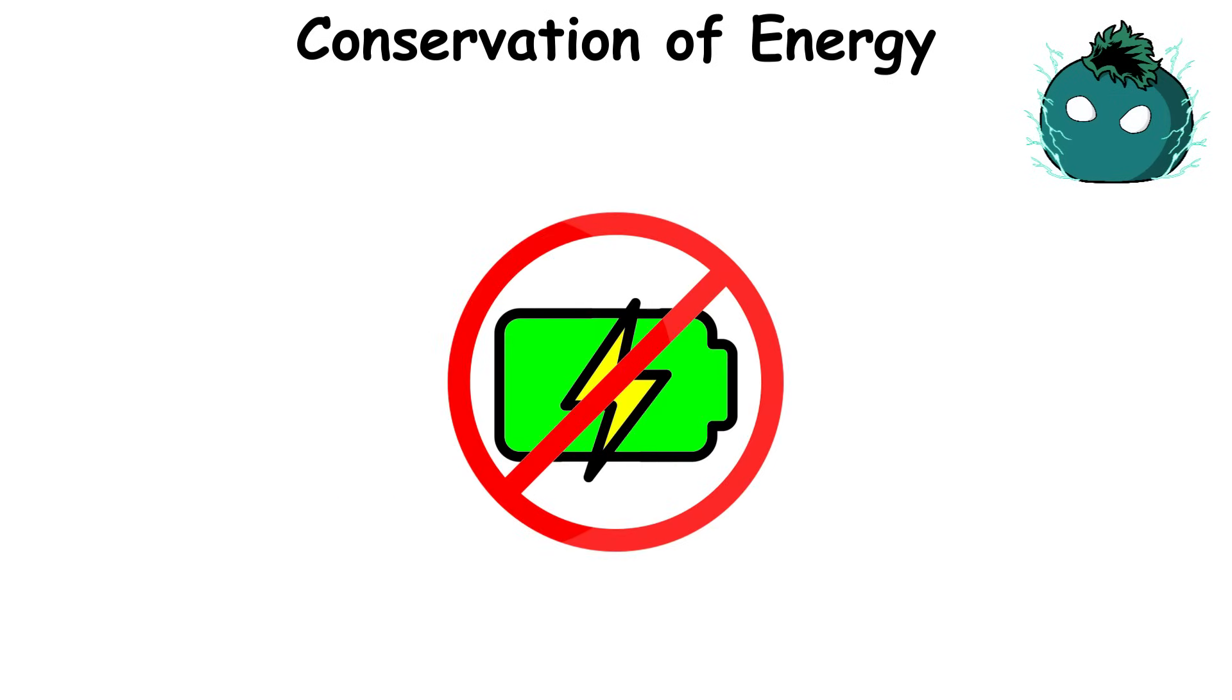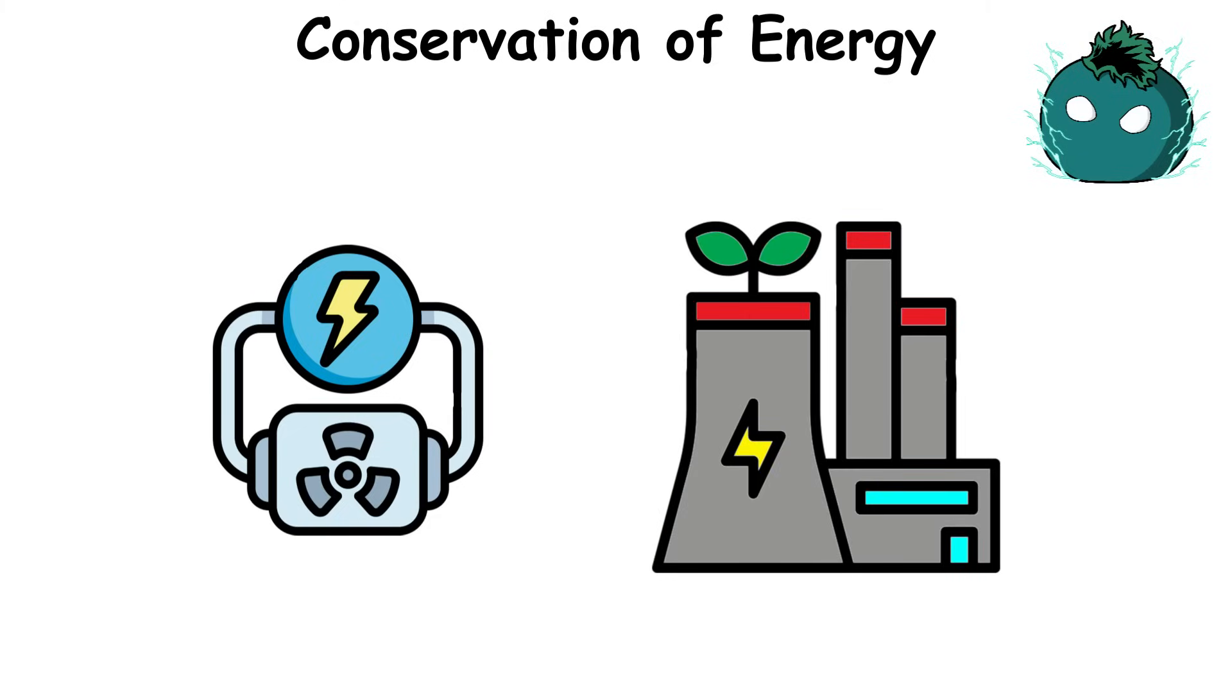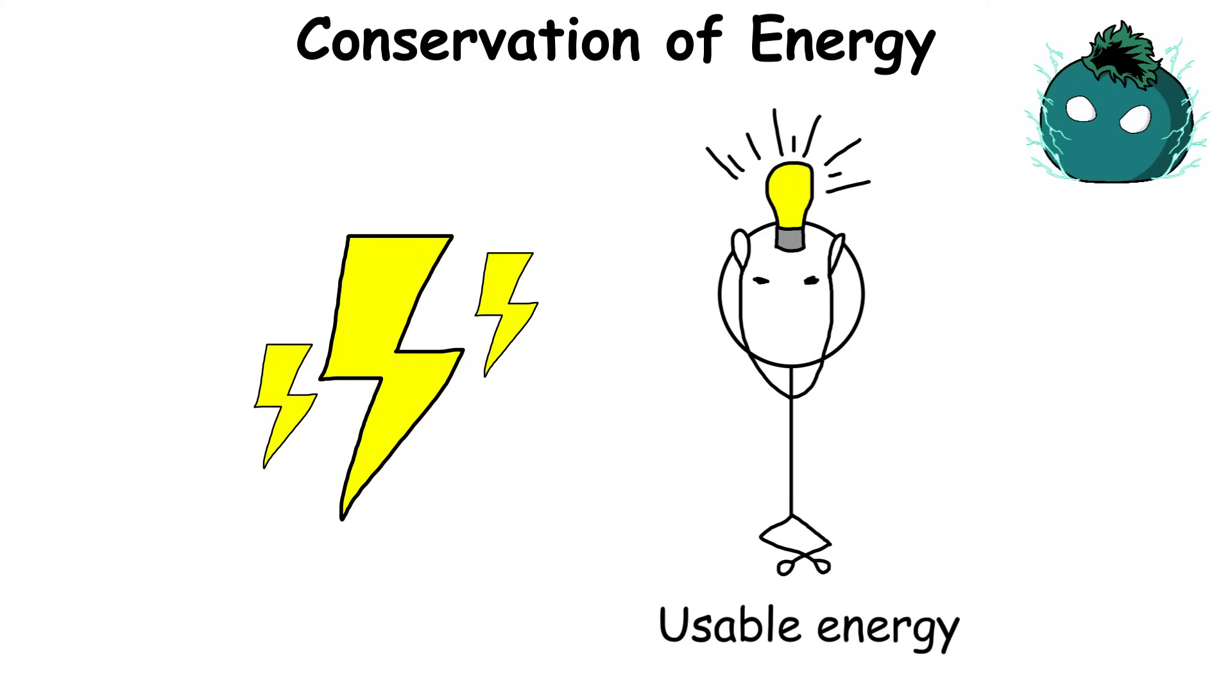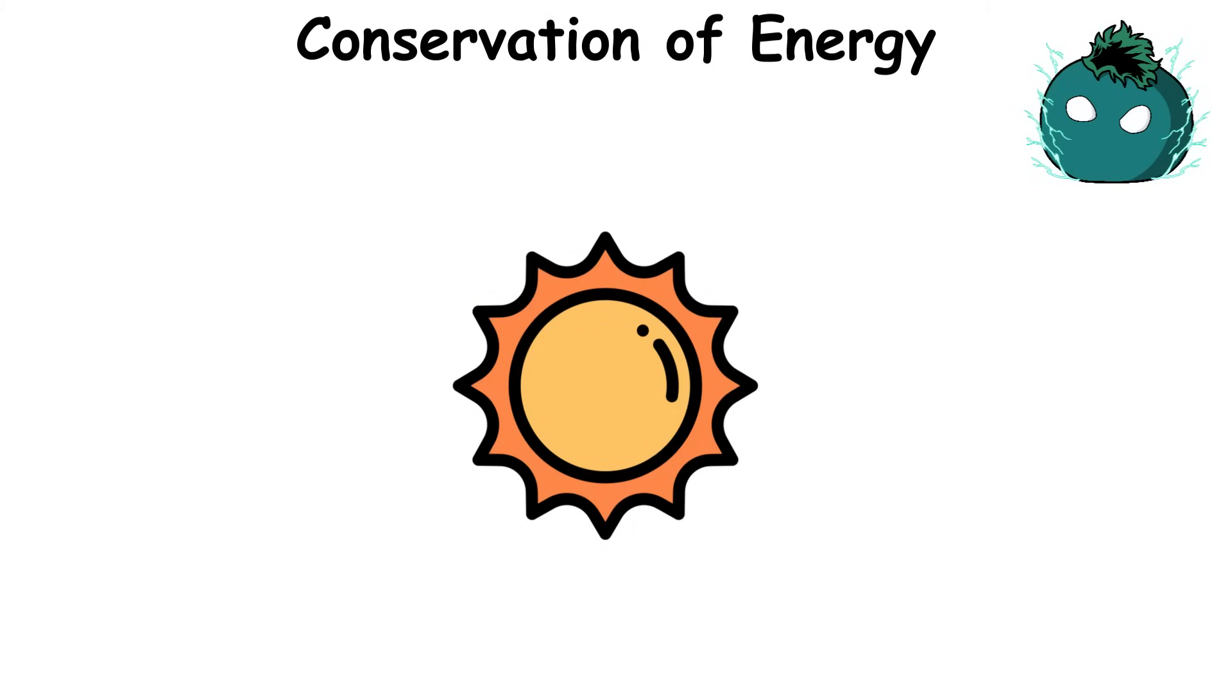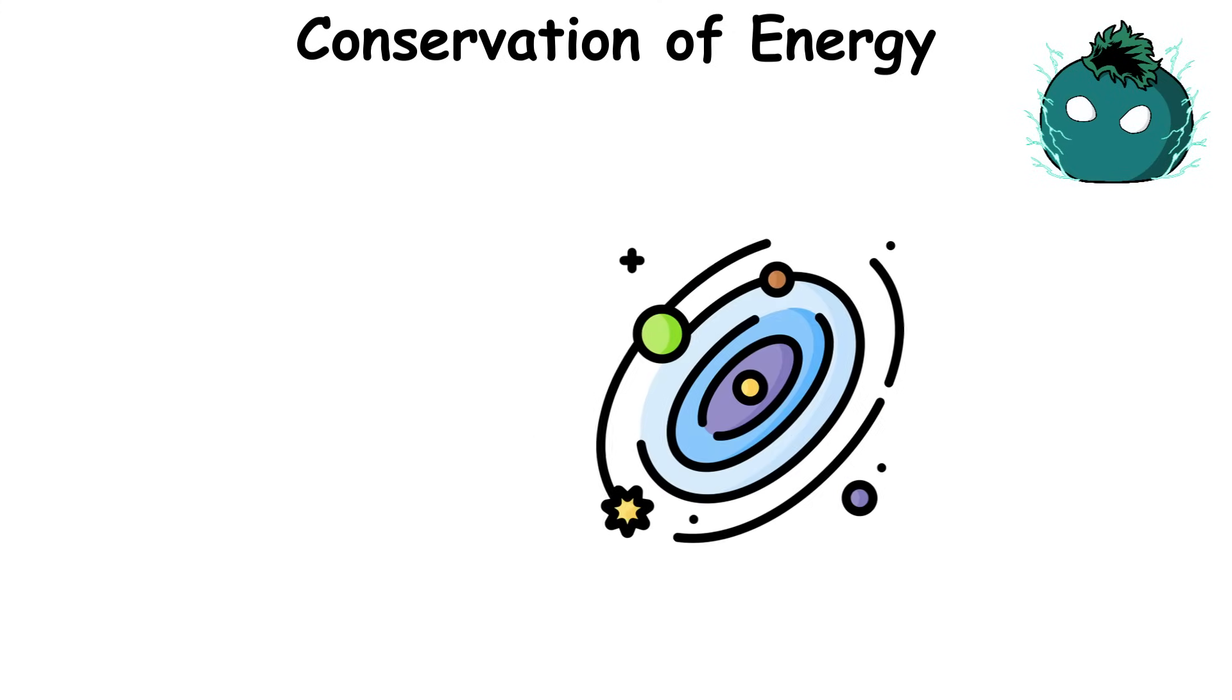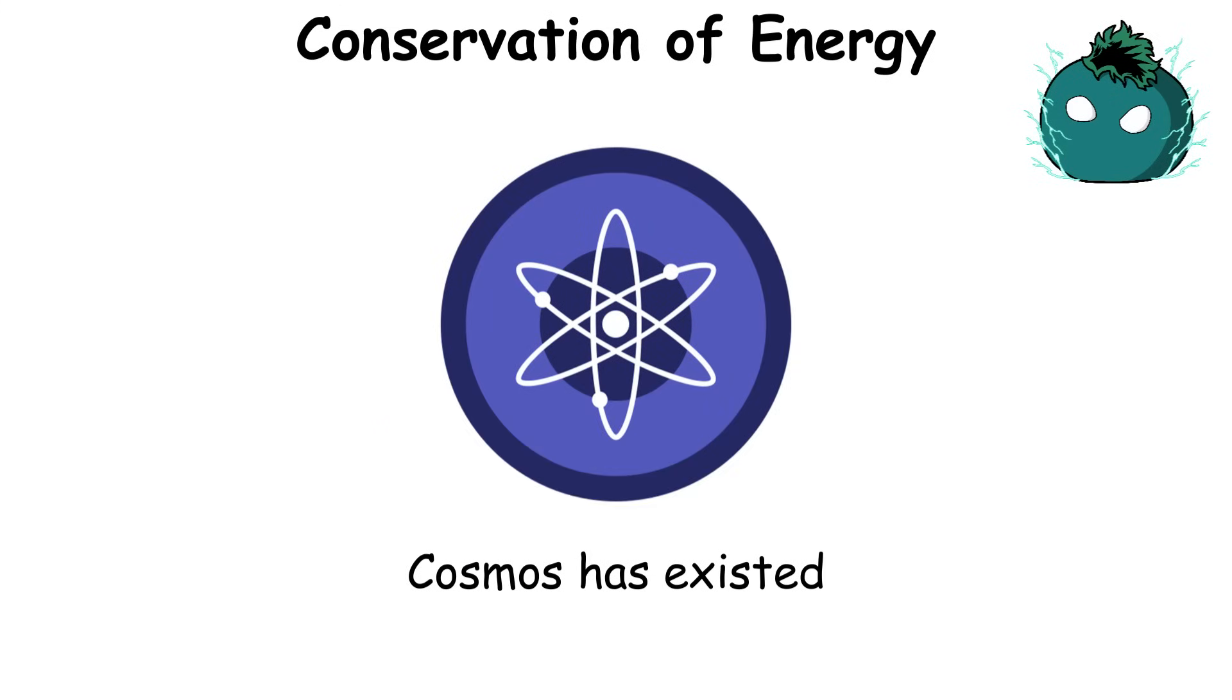So no energy is created when we generate energy with our power plants. They simply use energy from different sources and transform it into usable energy, electricity. For example, solar panels don't create energy from the sun, but only transform solar energy into usable energy. In this case, energy conservation is a game of give and take, where the universe keeps passing around energy that has existed for as long as the cosmos has existed.